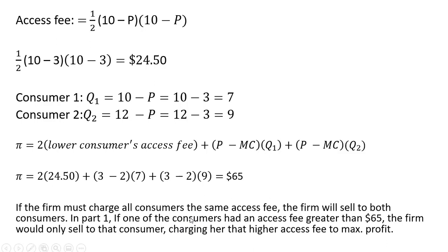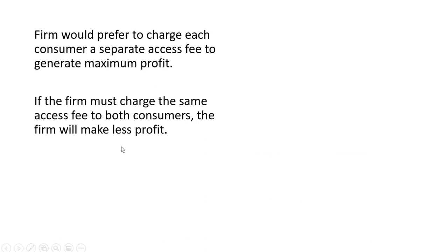If the firm must charge all consumers the same access fee, the firm will sell to both consumers. In part 1, if one consumer had an access fee greater than $65, the firm would only sell to that consumer, charging her the higher access fee to maximize profit. The firm would prefer to charge each consumer a separate access fee to generate the largest possible profit. However, if the firm must charge the same access fee to both consumers, it will make less profit, as shown in part 2.